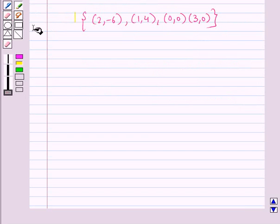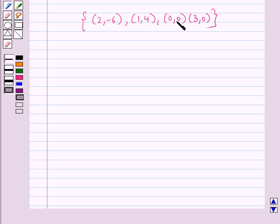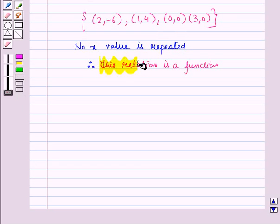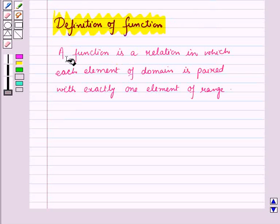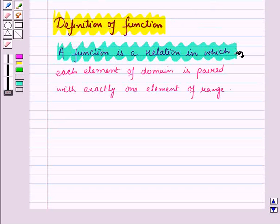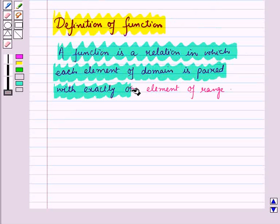Now consider another relation. Here you can see the X values are different, so no X value is repeated. Therefore, this relation is a function. A function is a relation in which each element of the domain is paired with exactly one element of the range. We can identify a function from a table, mapping, or set of ordered pairs of the given relation.